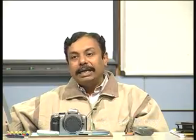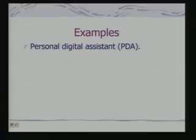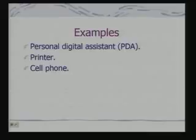Since it is embedded into an appliance, it needs to interact with the external world. So it has got analog interfaces. An embedded system is expected to respond, monitor, as well as control the external environment using sensors and actuators. Examples are personal digital assistants, printers that you use with computers, and cell phones.